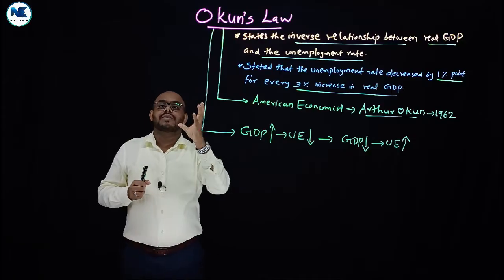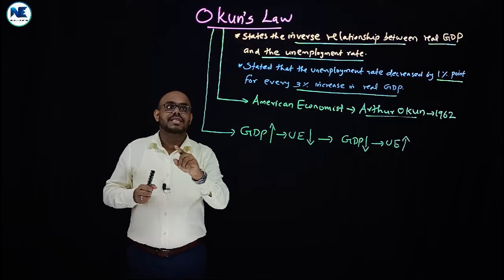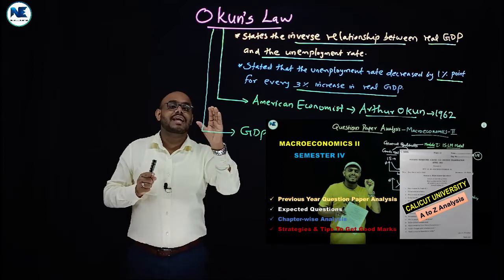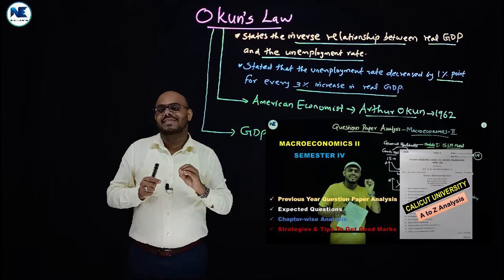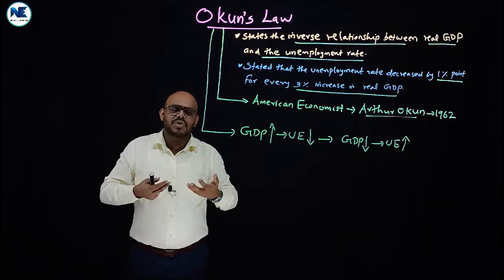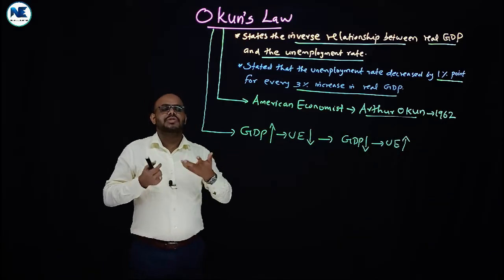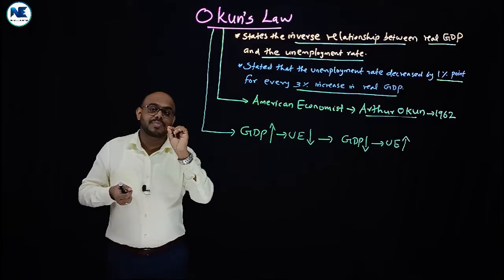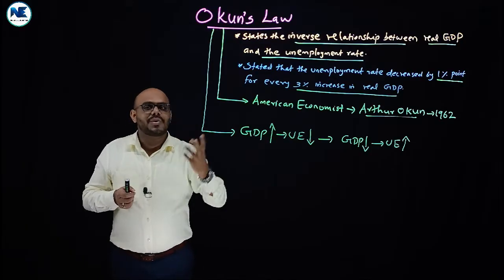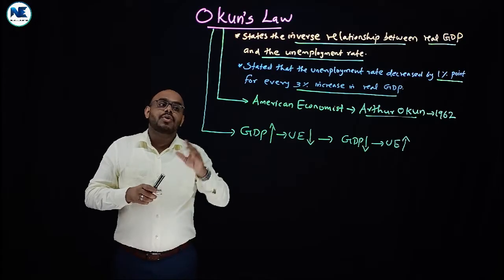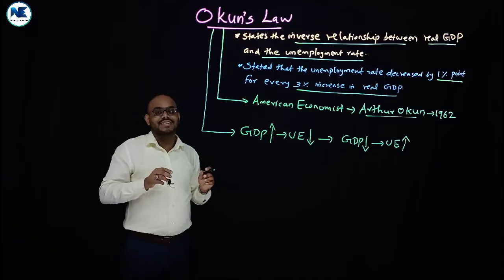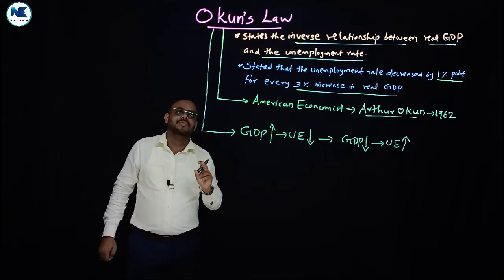Looking at previous exam questions, this topic appears as a paragraph-type or short answer question. In university exams, Okun's Law — similar to sacrifice ratio — frequently appears as a very short answer or short essay type question.